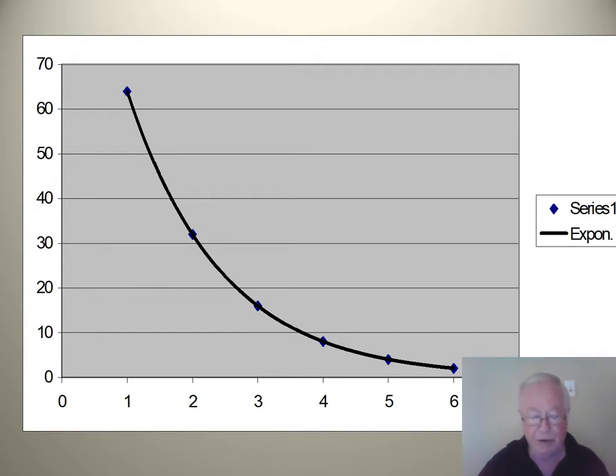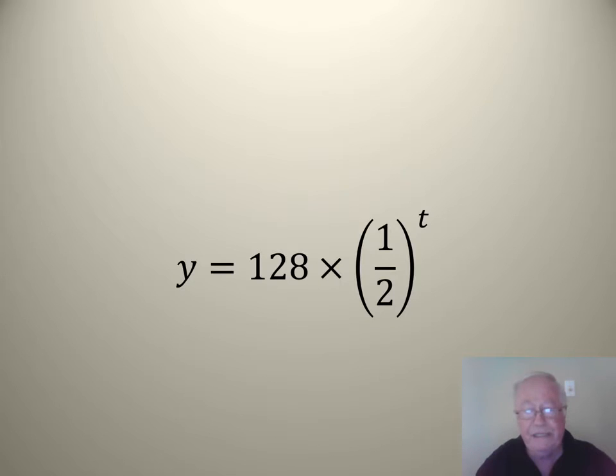You can express that as a mathematical formula. Very simply, as y equals 128 times a half, a little t represents how many hours went by, that is how many times to multiply by a half. So after one hour it would be 128 times a half once, that's 64. After two hours it would be 128 multiplied by a half times a half, which is 32. After three hours it would be 128 times a half times a half times a half, which is 16. And so it goes.